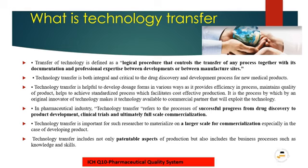In the pharmaceutical industry, technology transfer refers to the process of successful progress from drug discovery, clinical trial, to ultimately full-scale commercialization. Technology transfer is important for researchers to materialize on a larger scale of commercialization, because for example, one industry which has the facility to only do R&D but doesn't have the facility to manufacture at large scale will ultimately have to go to a manufacturing site where the facility is available. Technology transfer is very important because it includes not only tangible aspects such as IP or productions, but also business processes such as knowledge and skills, because the ultimate objective of technology transfer is to disseminate knowledge to another organization where the manufacturing facility is available.